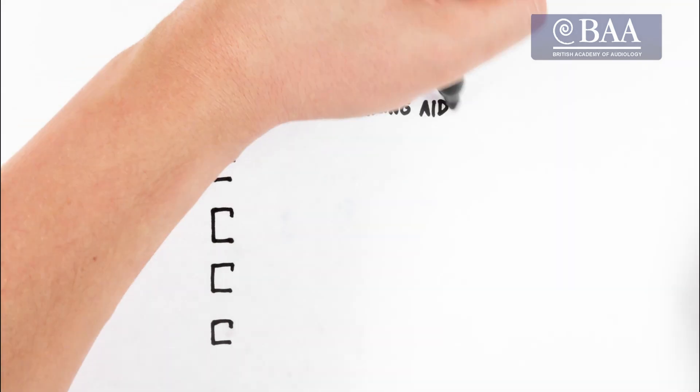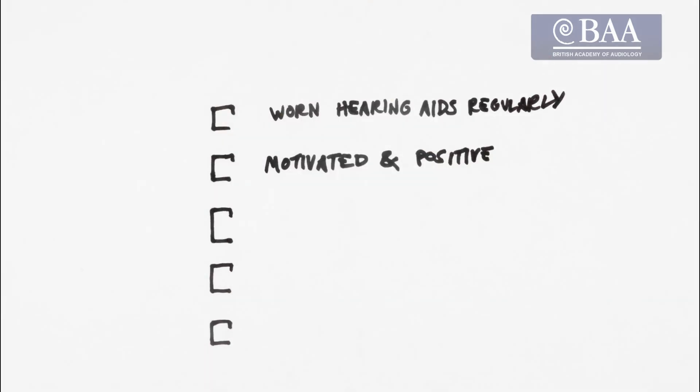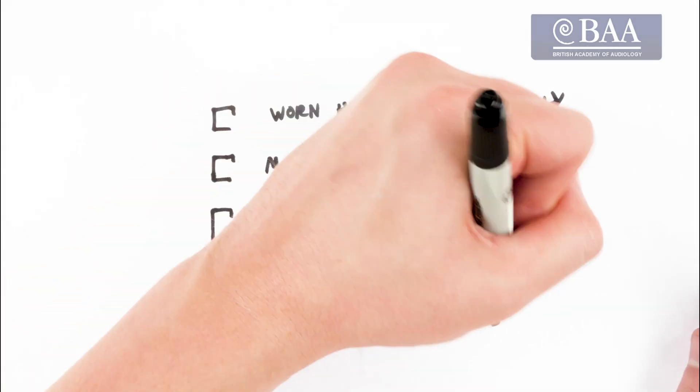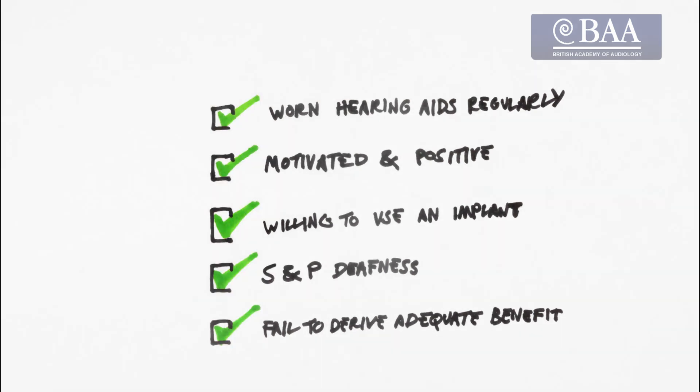To be eligible for a cochlear implant, adults must have worn hearing aids regularly and be motivated, positive and willing to use an implant. They must also have severe and profound deafness and fail to derive adequate benefit from hearing aids.